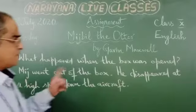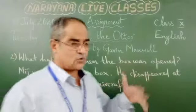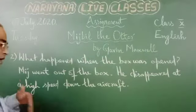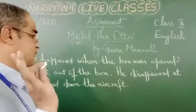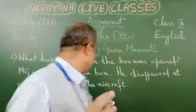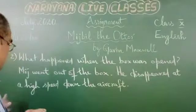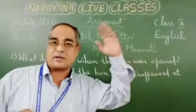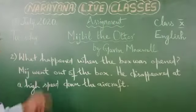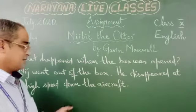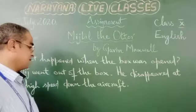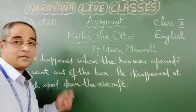What happened when the box was opened? Midge went out of the box. He disappeared at a high speed down the aircraft. He escaped from that box and ran inside the plane.